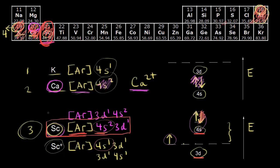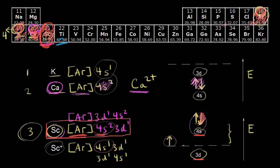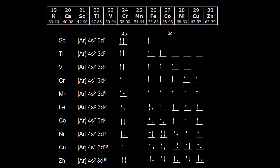For titanium, the next element, the easiest approach is the same: write argon in brackets, then read across — 4s¹, 4s², 3d¹, 3d² — giving [Ar] 4s² 3d². This again implies d orbitals fill after 4s, which isn't true, but it gets the right answer. It's useful to think about energy levels correctly, but looking at the periodic table is the fastest approach on a test.